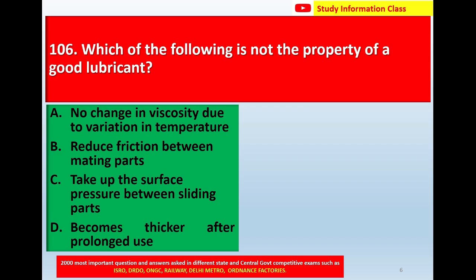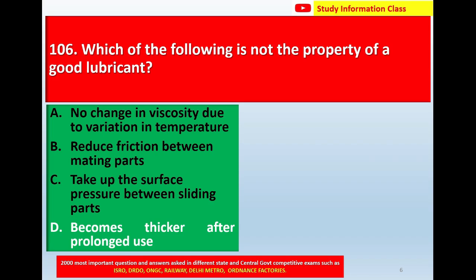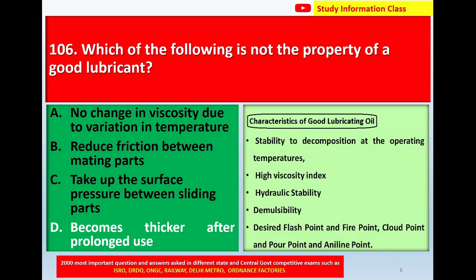Question number 106: Which of the following is NOT a property of a good lubricant? Option A: no change in viscosity due to variation in temperature. Option B: reduce friction between mating parts. Option C: take up the surface pressure between sliding parts. Option D: becomes thicker after prolonged use. Correct answer is option D — becomes thicker after prolonged use.